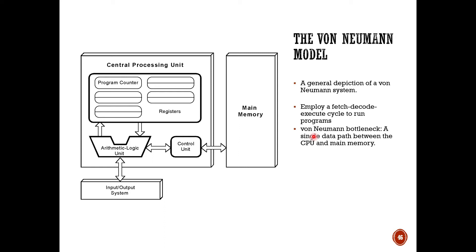Von Neumann systems employ a fetch-decode-execute cycle that we will learn right now. The bad thing about the von Neumann model is that it has a bottleneck — there is only one single path from the CPU to main memory. That can be very detrimental to the speed of the computer, because without multiple buses to get into different sections of what the CPU needs, it causes interrupts and the CPU cannot run properly.